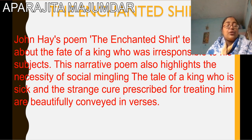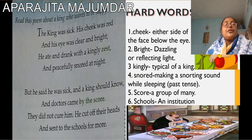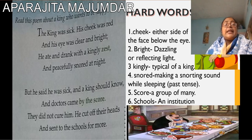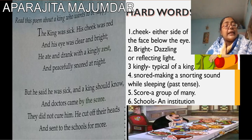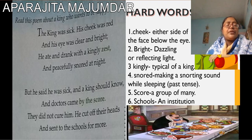You all have recited already. Now today we are going to go for an explanation. This is the first two stanzas which we have done yesterday. The king was sick. His cheek was red and his eye was clear and bright. He ate and drank with a kingly jest and peacefully snored at night. But he said he was sick and the king should know, and doctors came by the score. They did not cure him. He cut off their heads and sent to the schools for more.